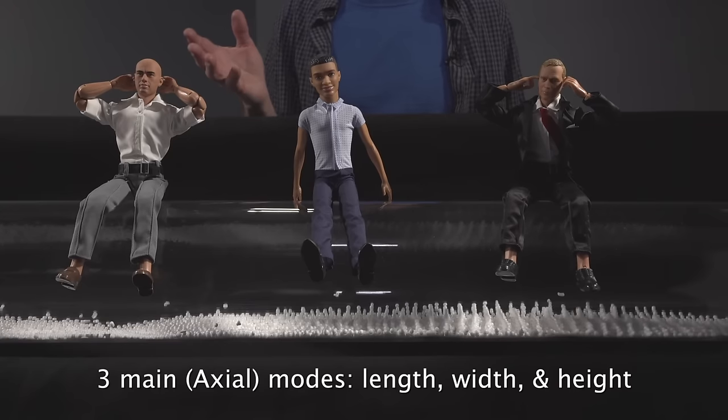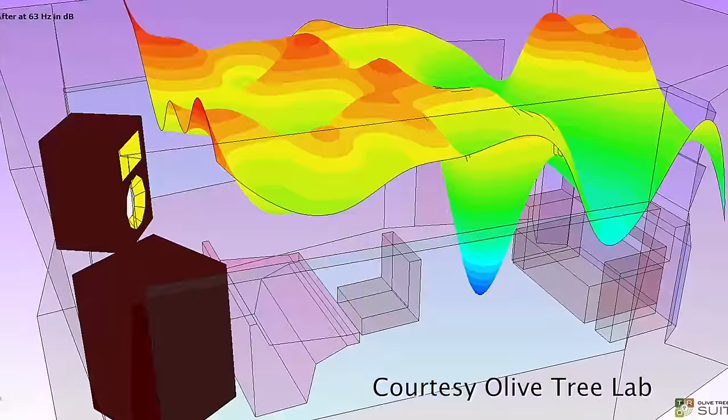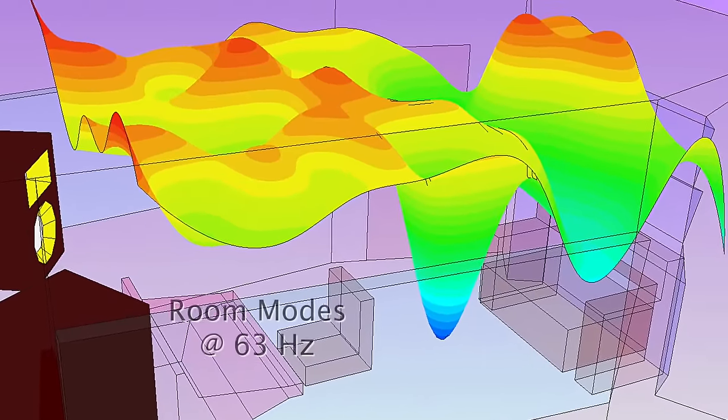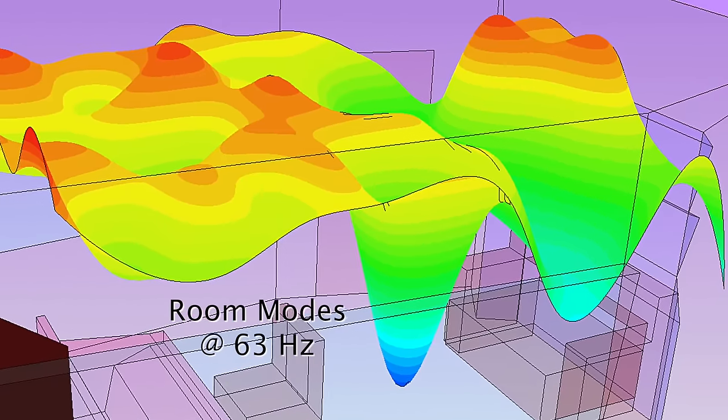Most rooms have at least three main modes: length, width, and height. Room mode cancellations and additions cause massive bass-level changes throughout a single listening area, regardless of the source accuracy. And that's just the first problem.